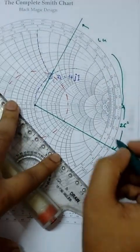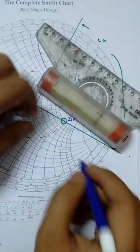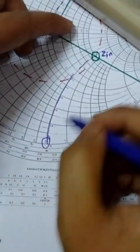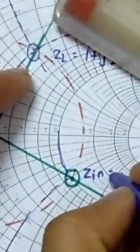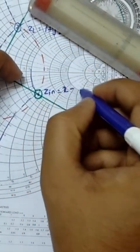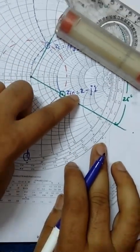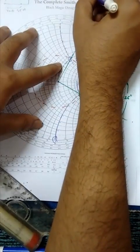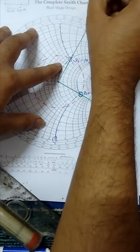Total rotation is 90 degrees. After rotation you got 2 minus j1. This is 1 minus j1, where this is the constant resistance circle value of 2, and reactance value which is in the downward side. So I have written small Zin normalized equals 2 minus j1.